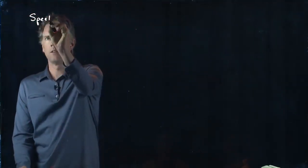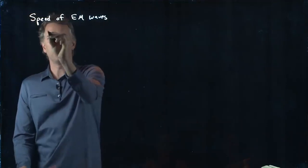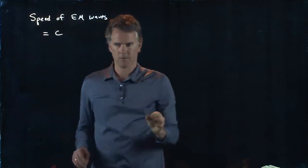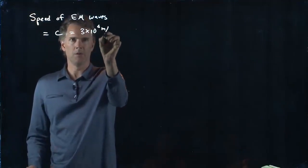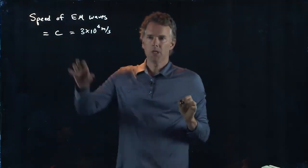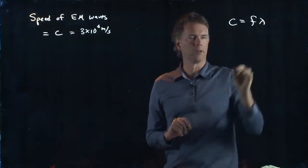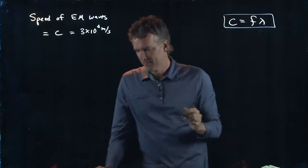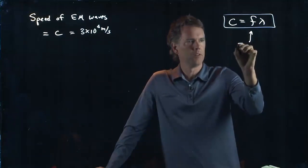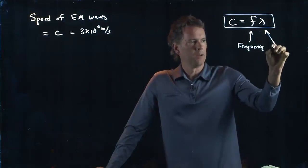One thing that we need to know is the speed of these EM waves. We said it was equal to C, and C is 3 times 10 to the 8 meters per second. But there is a relationship between C and some of the other quantities that we're going to talk about, which is the following: C is equal to F times lambda. F is the frequency, lambda is the wavelength.